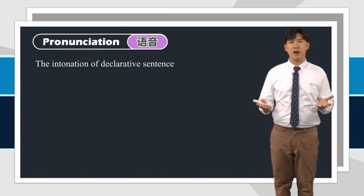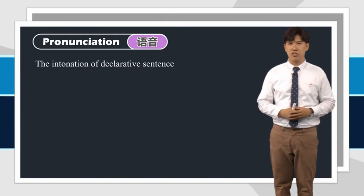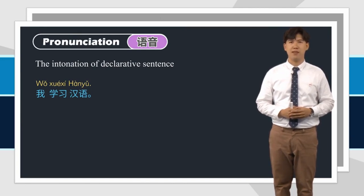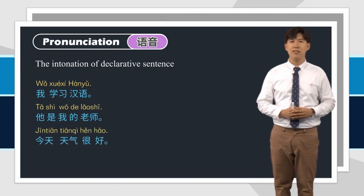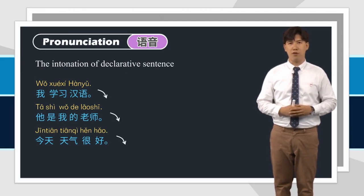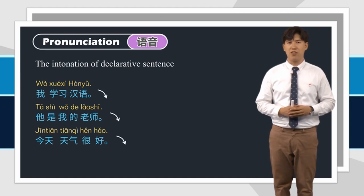Today, we will practice more about the intonation of declarative sentences. Look at the screen and read after me: 我学习汉语. 我学习汉语. 他是我的老师. 今天天气很好. Good job! They all have a falling intonation because they are all declarative sentences.